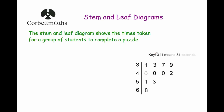So if we have a look at it, the key says 3 line 1 means 31 seconds. So this number is 31 seconds, then 33 seconds, 37 seconds, 39 seconds, 40 seconds, 40 seconds, 40 seconds, 42 seconds, 51 seconds, 53 seconds and 68 seconds. So that's what the Stem and Leaf tells us.